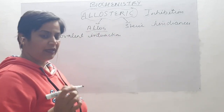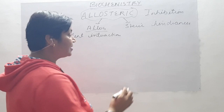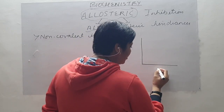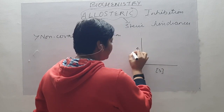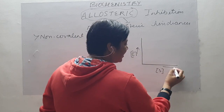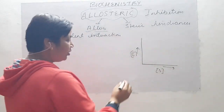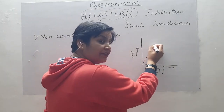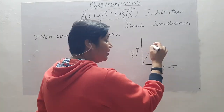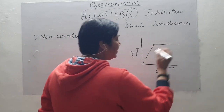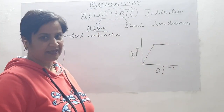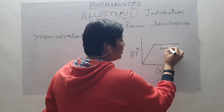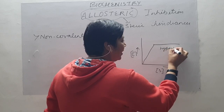In the previous class we discussed the effect of substrate concentration on enzyme activity. More concentration of substrate leads to more enzyme activity, and once the active site of the enzyme is filled it obtains saturation kinetics. This type of curve is known as a hyperbolic curve.